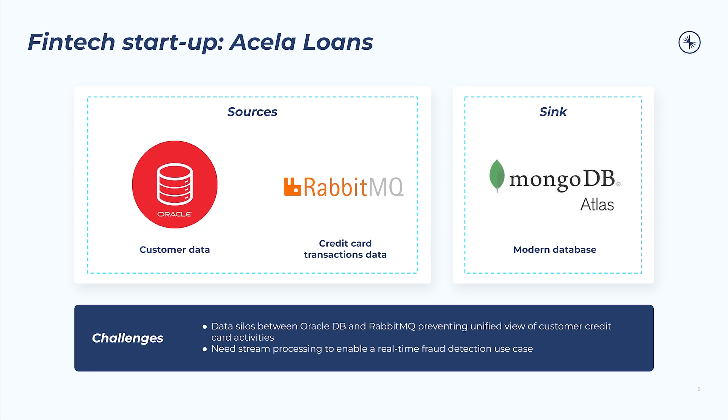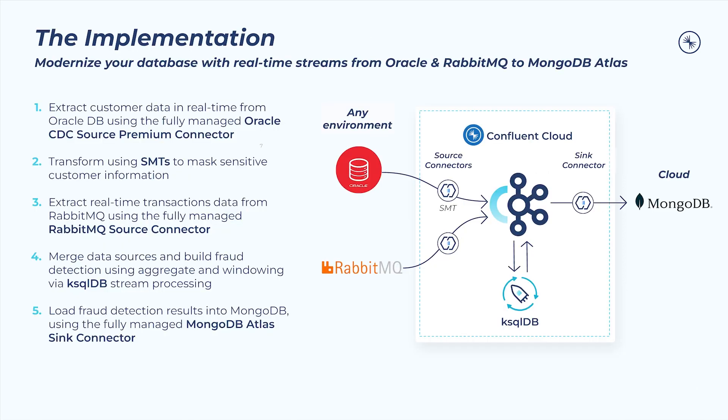Let's go through an overview of our implementation steps. First, we'll extract customer data from Oracle DB to Confluent Cloud using the fully managed Oracle CDC Source Premium Connector. In this demo we're using an Oracle database that is accessible from the outside, but you could connect to any Oracle database either on-premise or in the cloud. Next, we'll mask sensitive customer PII fields as the data streams into the Kafka topic using SMTs on the fully managed Oracle CDC Source Premium Connector. Then we'll extract transactions data from our second data source, RabbitMQ, with the fully managed RabbitMQ Source Connector to Confluent Cloud.